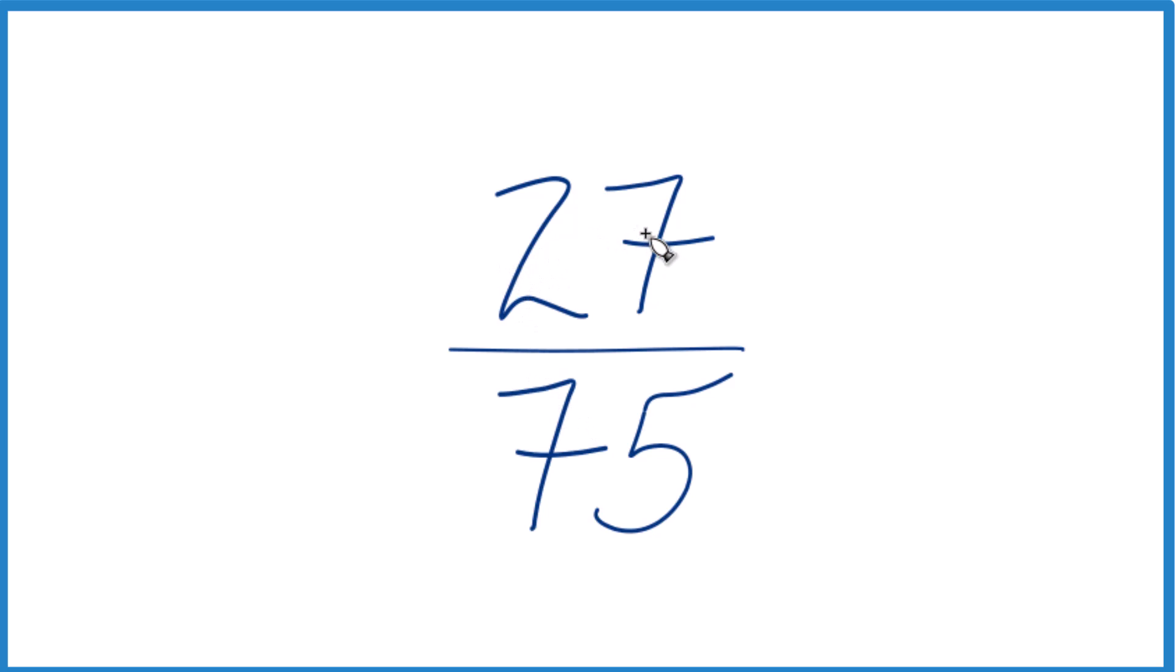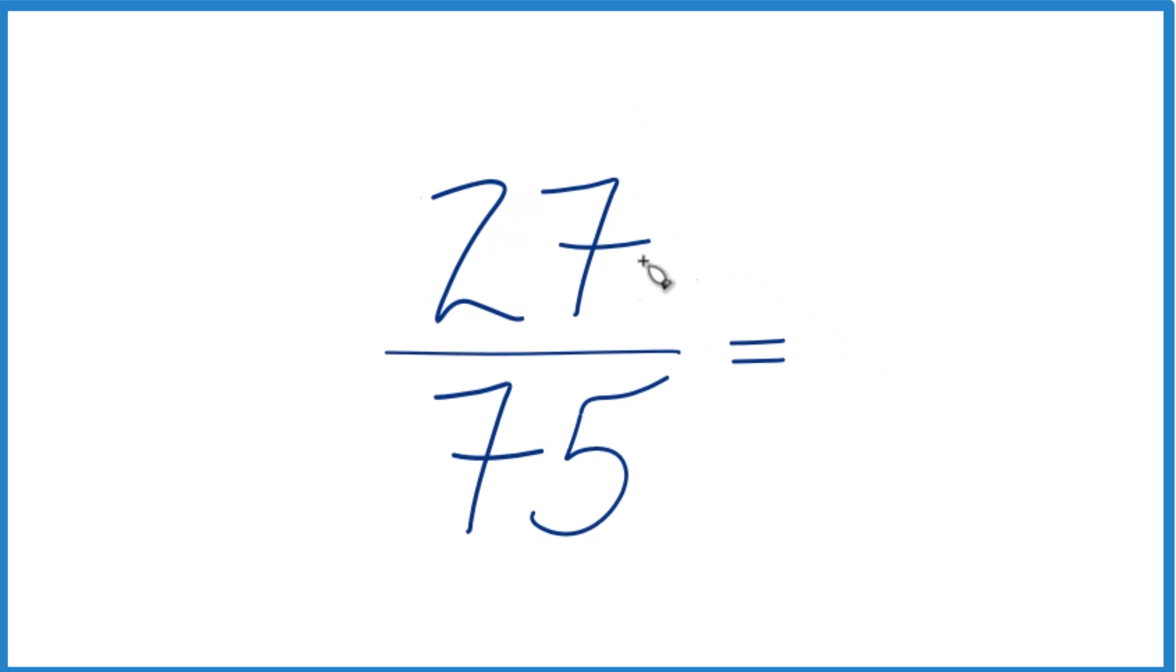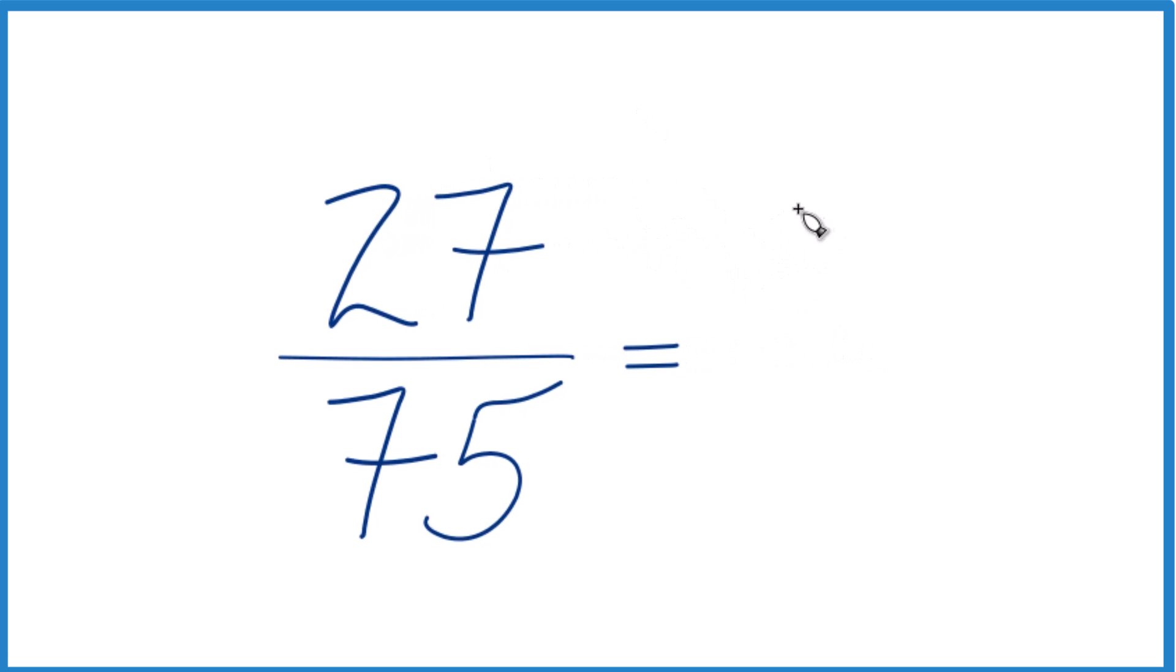So I'm going to try that first. I'm going to divide 27 by 3—27 divided by 3, we said that's 9—and 75 divided by 3, that's 25. We really can't reduce this fraction any further.